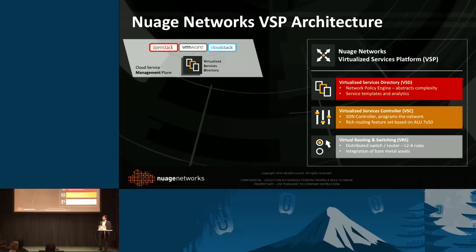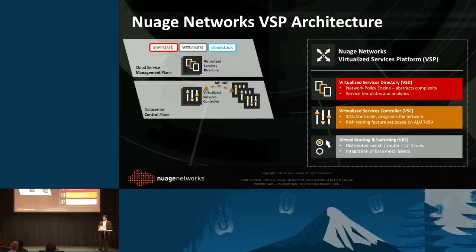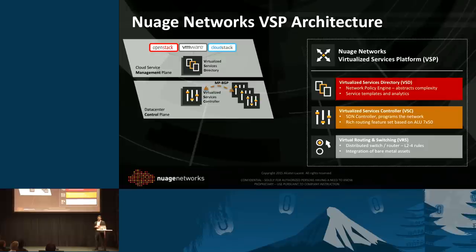Any custom cloud management interface through that Northbound API. The next layer up is the control plane, and that's basically where we leverage our relationship with Alcatel-Lucent, and we virtualize the service provider router, the SR platform, and we virtualize the control plane. With that we get a lot of maturity as well as features in terms of routing, and that's really what gives us the scale.